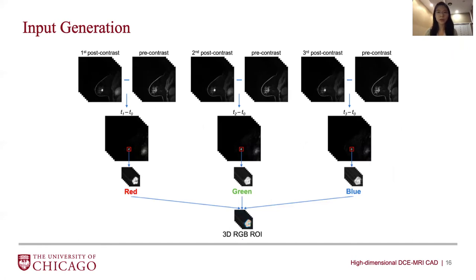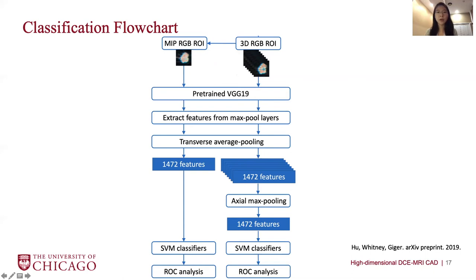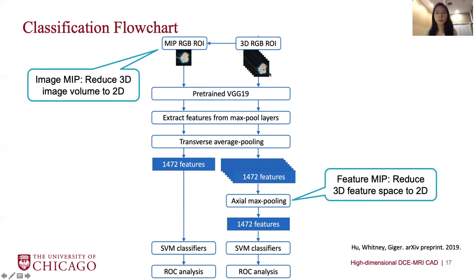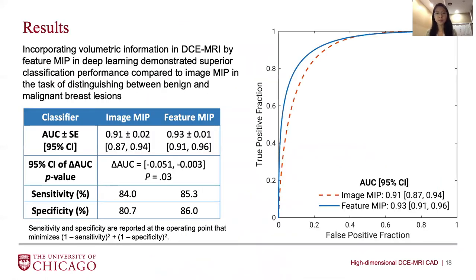We incorporated four time points from the DCE sequence by inputting the first post-contrast image into the red channel, the second into the green channel, and the third into the blue channel to obtain a 3D RGB ROI for the lesion volume. From this 3D RGB ROI, one route was to reduce the volume to 2D by taking the maximum intensity projection. Another route was to extract features from all slices in the lesion volume and reduce the 3D feature space to 2D by taking the most significant occurrence of each feature across all slices. The image MIP method yielded an AUC of 0.91 and the feature MIP method achieved an AUC of 0.93, with the difference being significant.